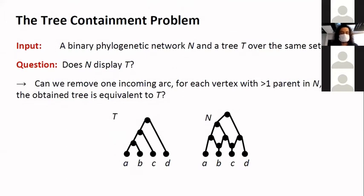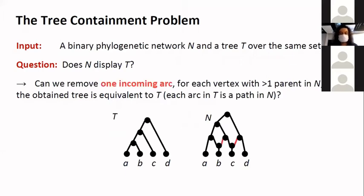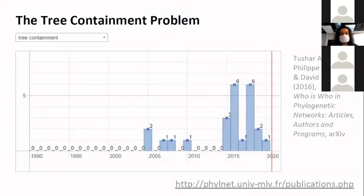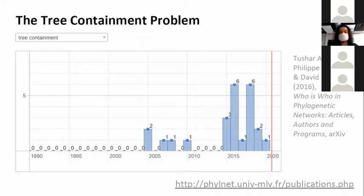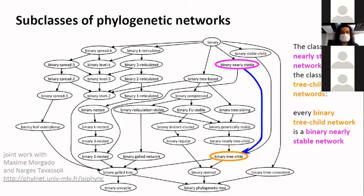I can define it more precisely: if I have a tree and a network, can I remove some arcs in the network such that I obtain a tree which is equivalent to the given tree — meaning for each arc of the tree, you can find a path in what remains of the network? It seems quite bad news that this problem is NP-hard, but you can see that in the last five years there have been a lot of publications on it. You can go to phylnet.info to find literature about networks — about 30 papers on the methodology of phylogenetic networks are published each year internationally.